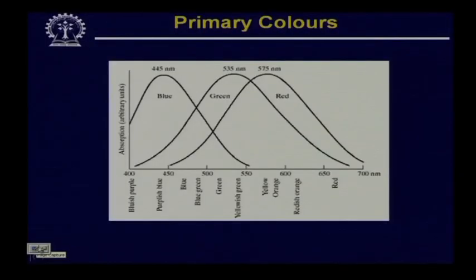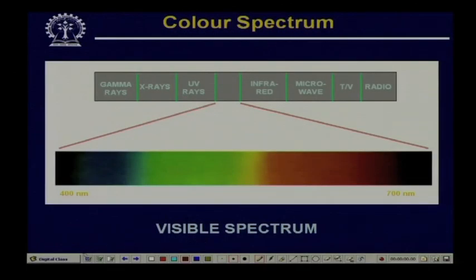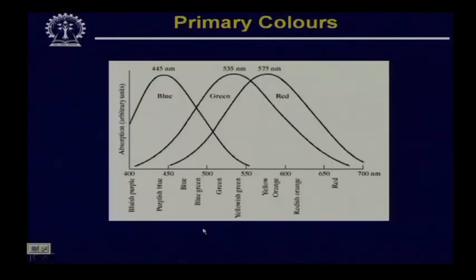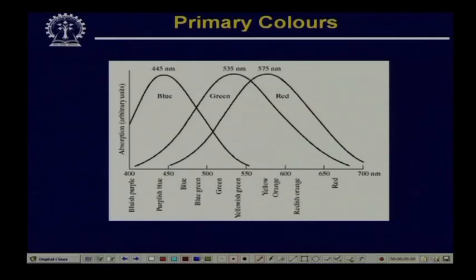The sensitivity is maximum at specific wavelengths: the blue cone is maximally sensitive at 445 nm, the green cones are most sensitive at 535 nm, and the red cones are most sensitive at 575 nm. These experimental figures are slightly different from the CIE specification, and one important point is that though CIE specifies red, green, and blue to be of certain wavelengths, no single wavelength can specify any particular colour.